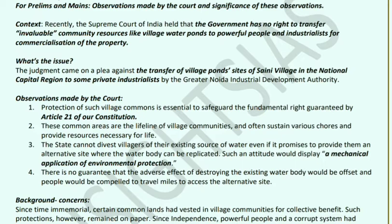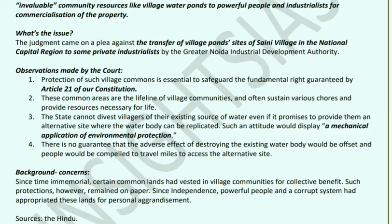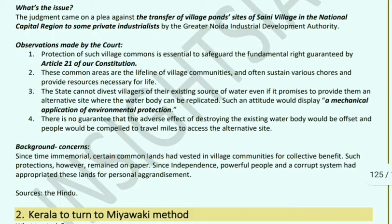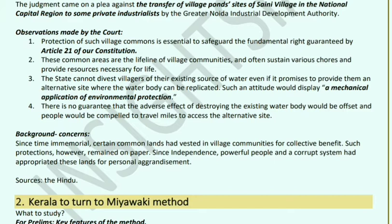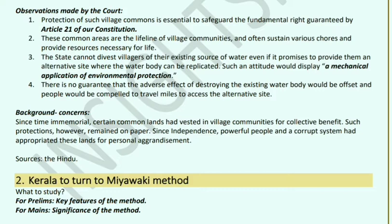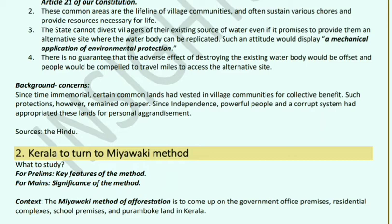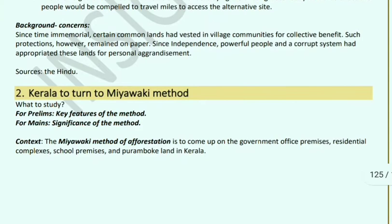The court held that all village resources are protected as fundamental rights — they are the lifeline of village communities and provide resources necessary for life. The state cannot distance villagers from their source of water, even if an alternative site is provided, as merely providing an alternative is a mechanical application of environmental protection with no guarantee the adverse effect of destroying an existing water body will be offset. Immemorial common lands belonging to village communities exist for their collective benefit and cannot be commercialized.